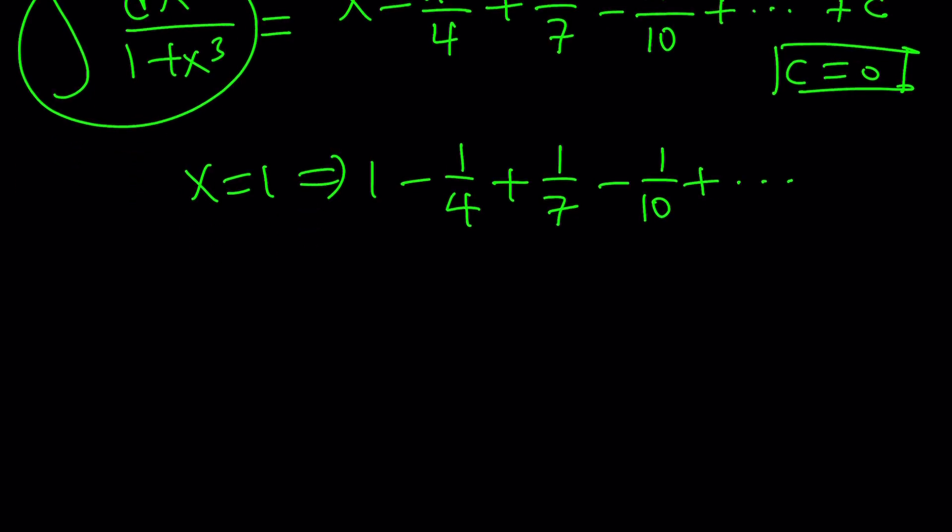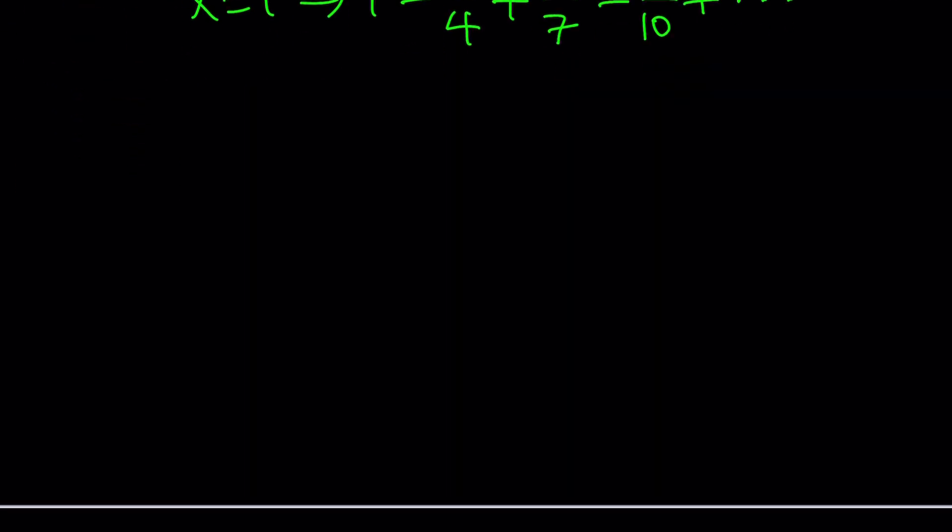So how do you integrate 1 over 1 plus x cubed? Let's go ahead and write it as 1 over x cubed plus 1 and then factor it using sum of two cubes. You know the formula? x plus 1 times x squared minus x plus 1. There's a formula for a cubed plus b cubed, which is called sum of two cubes, and you need to know that.